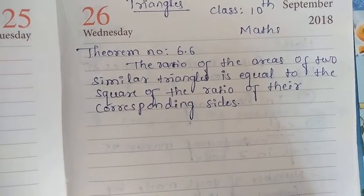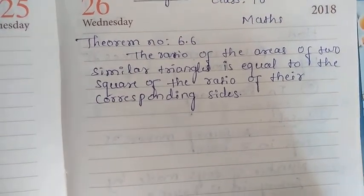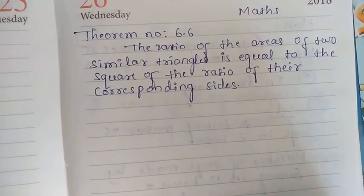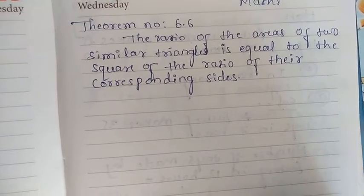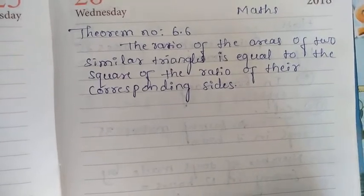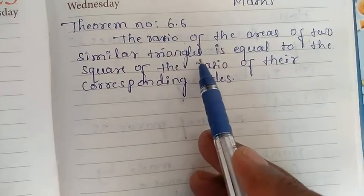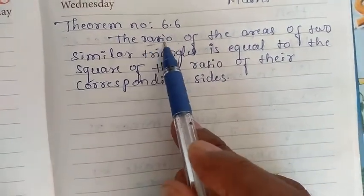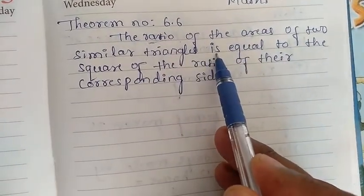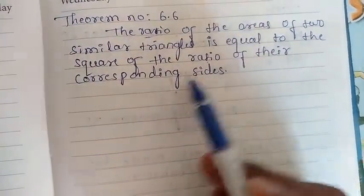At the beginning of this lesson we have seen one very important theorem: if a line is drawn parallel to one side of a triangle to intersect the other two sides at distinct points, then the other two sides are divided in the same ratio. But here, the ratio of the areas of two similar triangles is equal to the square of the ratios of their corresponding sides.